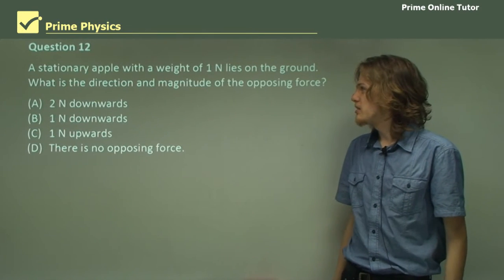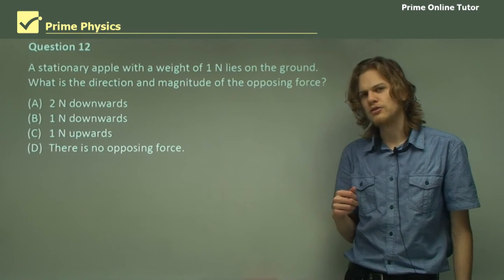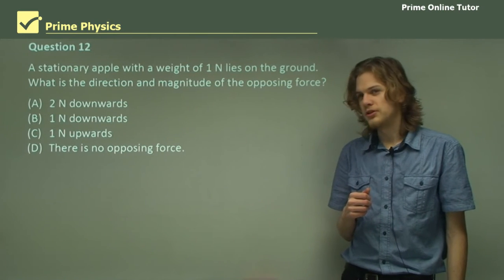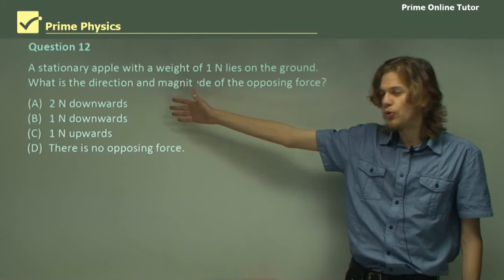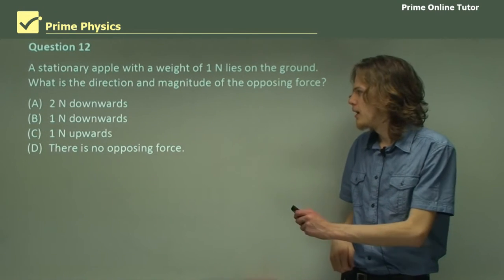Question 12. A stationary apple with a weight of one Newton lies on the ground. What is the direction and magnitude of the opposing force? So we have a few options here. The opposing force is one or two Newtons downward, the opposing force is a Newton upward, or there is no opposing force. So let's go through these.